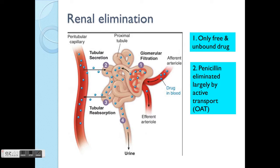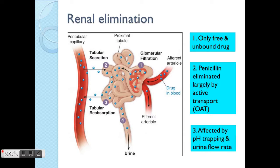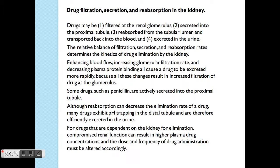There are several specific examples of drugs eliminated by specific processes. Glomerular filtration is actually a passive process. For example, penicillin can be eliminated by an active transport system. All these concepts are also influenced by other factors such as pH trapping, which we will go through in the absorption class, and also urine flow rate.